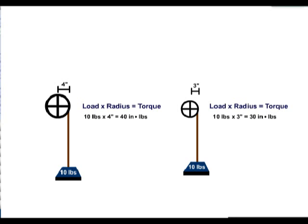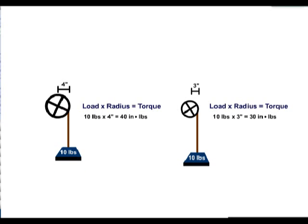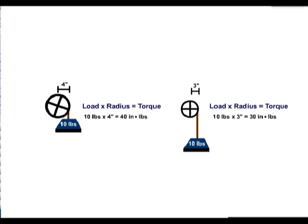Hydraulic motors are rated according to displacement and torque. Hydraulic motors are rated in foot or inch-pounds of torque per given psi, typically in pounds per 100 psi. Torque is equal to load times radius. Large displacement motors usually have a greater radius for the hydraulic fluid to push against, and therefore they create more torque at a specific pressure.